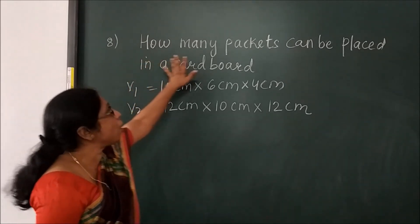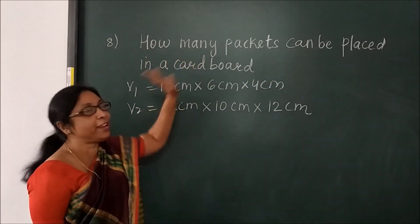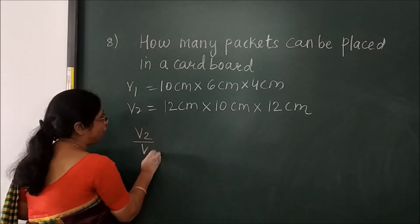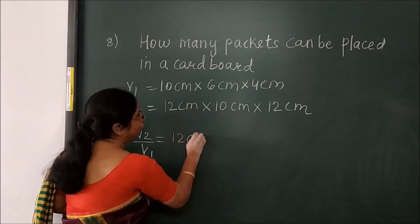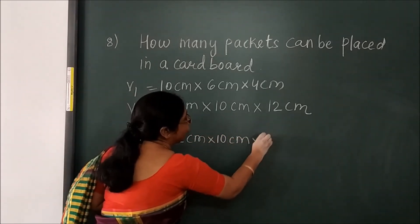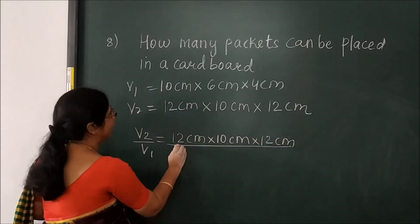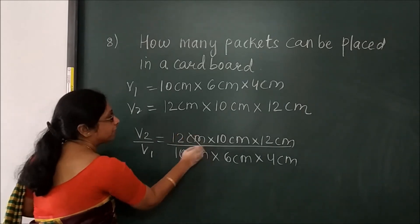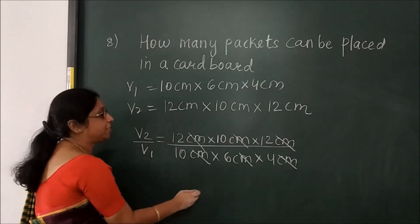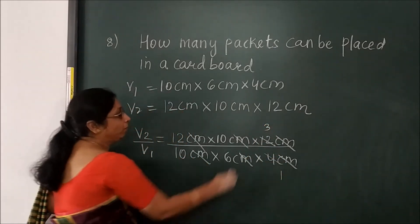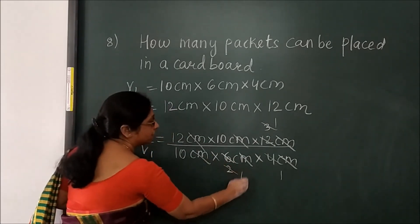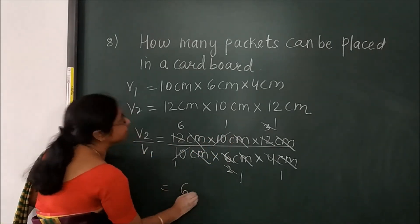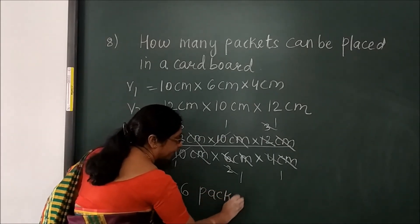Now how many packets can be placed in a cardboard? Again 'how many' means divide. Volume V2 divided by volume V1 — the packet dimensions are 10 cm, 6 cm, and 4 cm. Cancel centimeters. Working through the division gives 6 packets.